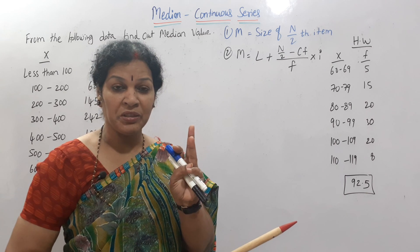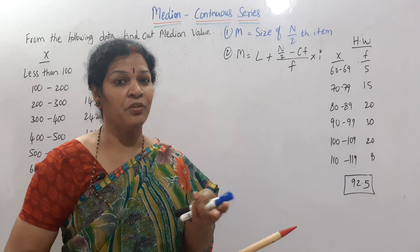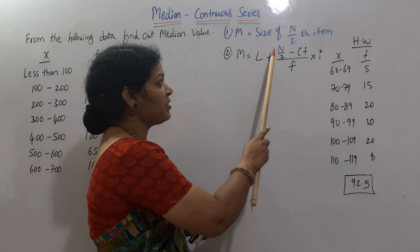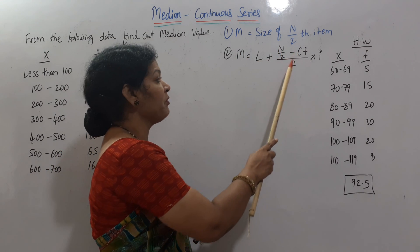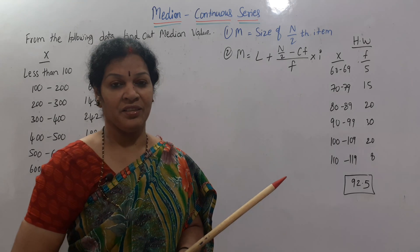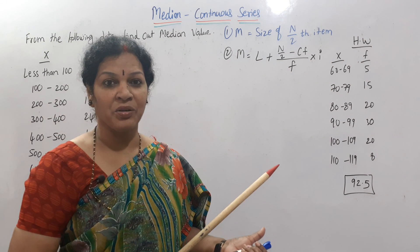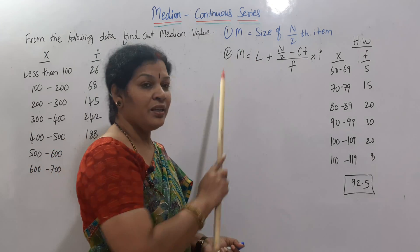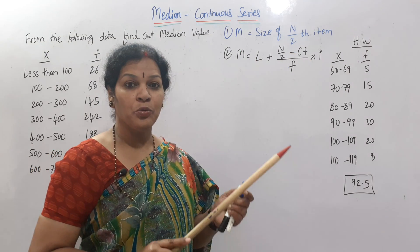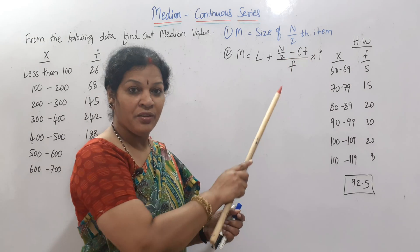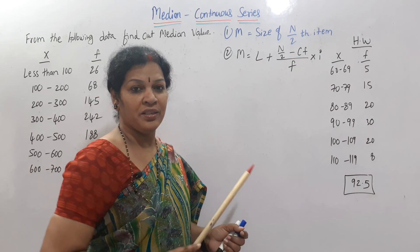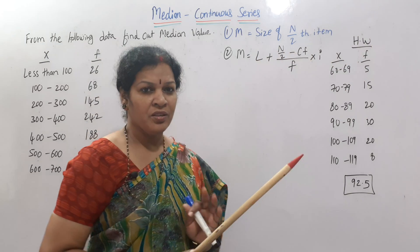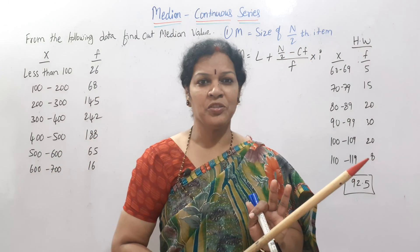Step three involves a separate second formula. Please remember: Median = L + (n/2 − CF) / f × i. I will explain each component while working out the problem. L is the lower class interval, n/2 is the item position, CF is cumulative frequency, f is frequency, and i is the class interval width. You need to learn this formula by heart.